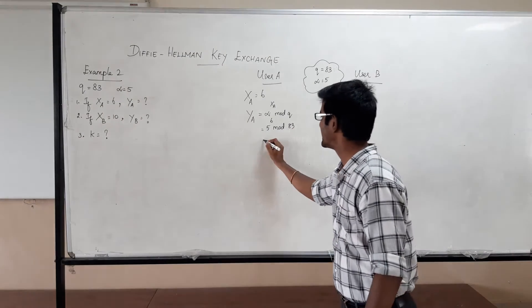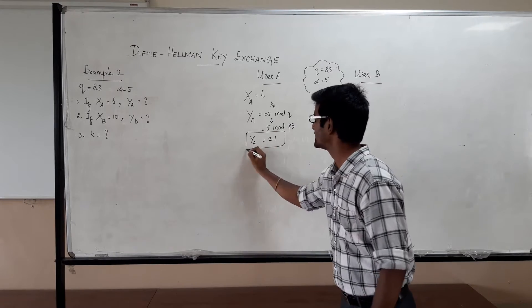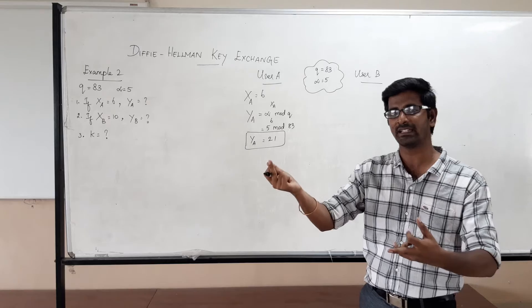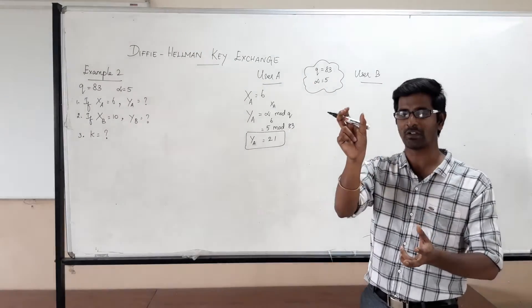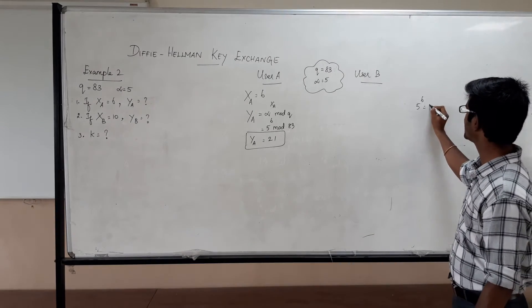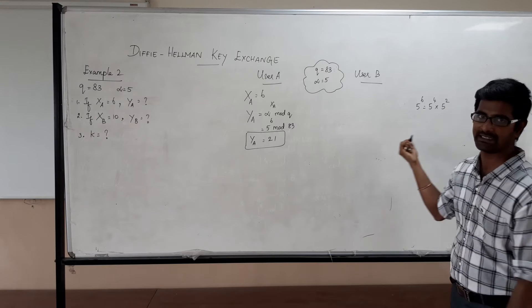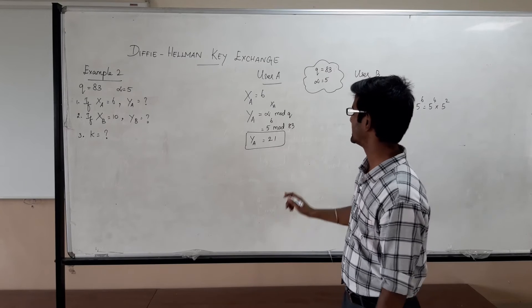So you just try solving this using modular exponentiation like 5 power 1 mod 83. Then double it, 5 power 2 mod 83. Then double it, 5 power 4 mod 83. And then 5 power 6 can be written as 5 power 4 into 5 power 2. So 5 power 6 can be written as 5 power 4 mod 83 into 5 power 2 mod 83. You just solve it. And I will be getting 21 as the result.